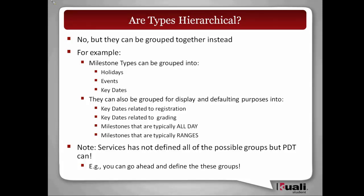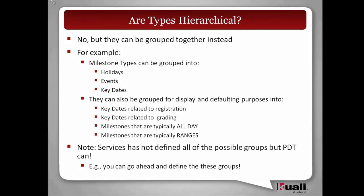The same type can appear in multiple groups, so groups can be cross-cutting. For example, there is no type called 'holiday,' but there is a group called 'holidays' that maps to all the individual holiday types like 4th of July, Christmas, Thanksgiving. The code can just say 'display all holidays' and those map to whatever types are mapped — so if you define a whole different set of non-North American holidays, the code still works because the rule is coded against the grouping called 'holidays,' not against the 4th of July specifically.